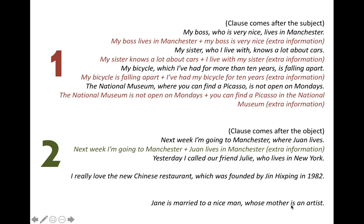Second example of type two: 'Yesterday, I called a friend, Julie, who lives in New York.' The relative pronoun is who and the relative clause is 'who lives in New York,' referring to the object of the first clause — I called Julie. Separating: 'Yesterday I called a friend, Julie' and 'Julie lives in New York.' Julie lives in New York is extra information — I don't need to know that to know that I called her.